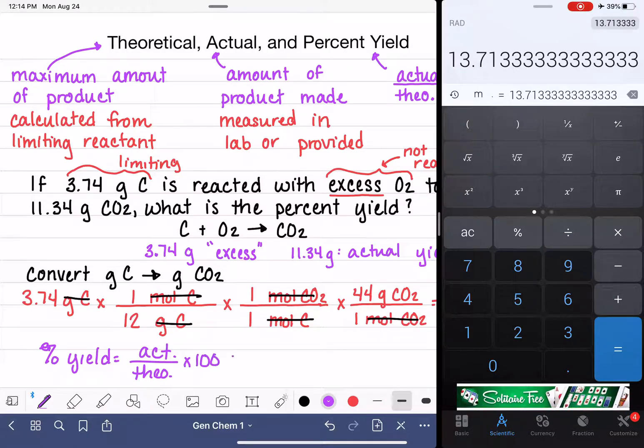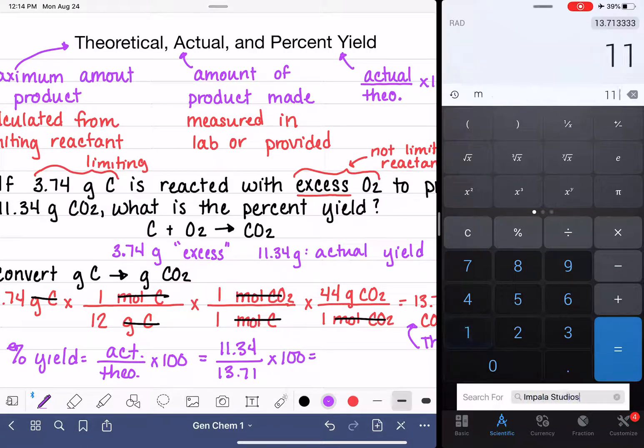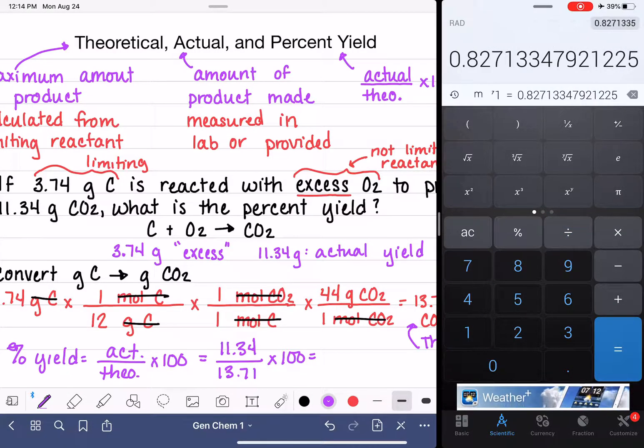The percent yield is our actual divided by the theoretical times 100. The actual yield, which is what was given to us in the problem, 11.34. The theoretical yield that we just calculated, 13.71, multiply by 100, and we get 82.71%.